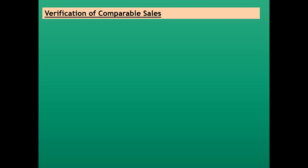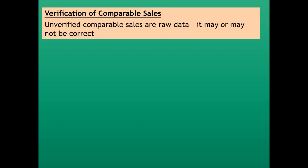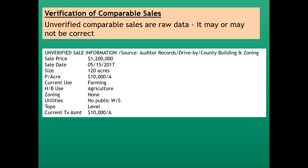We need to discuss verification of comparable sales. Unverified comparable sales are raw data which may or may not be correct. Here's an example of an unverified sale: sourced from auditor records, the property sold for $1.2 million on May 15, 2017, containing 120 acres at $10,000 an acre. It is currently farmed, highest and best use is agriculture, no zoning, no public utilities, level topography, and the current tax assessment is $10,000 an acre.